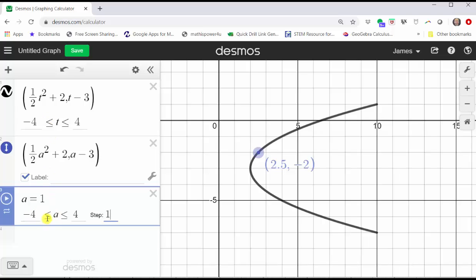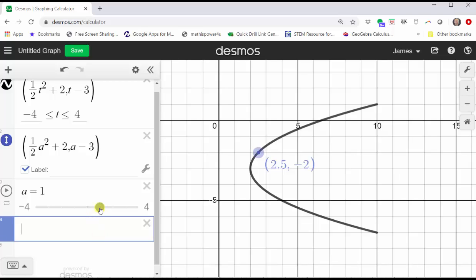Notice a and t have the same interval, and a is going to increase by 1 each time. So let's click outside cell 3. And now we'll use the slider to change the value of a to -4 by dragging it to the left. And now as we increase a, we can see the orientation of the graph or the direction the graph is traced out as t or a increases from -4 to 4. Notice how this also gives us the corresponding ordered pair for each value of a or t. So we could use these ordered pairs to complete the table of values as well.